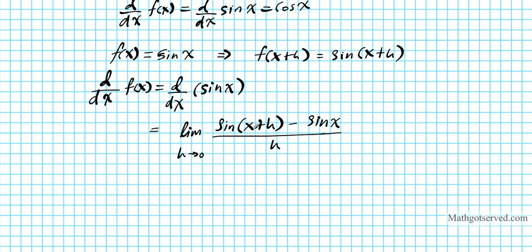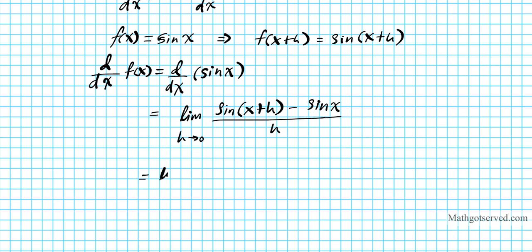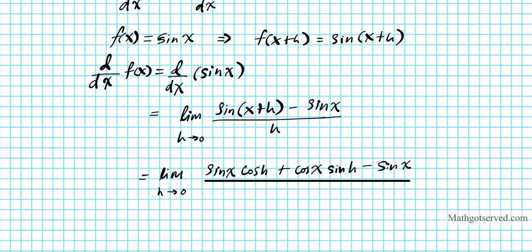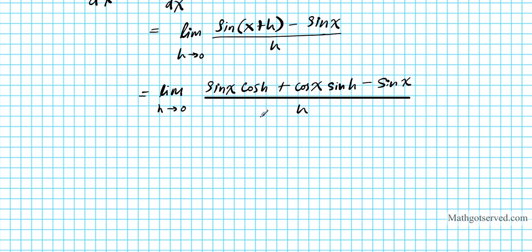Now I'm going to break down sine(x+h) using formula number four, the sum identity for sine. So sine(x+h) expands to sine x cosine h plus cosine x sine h. The expression becomes the limit as h approaches zero of (sine x cosine h plus cosine x sine h minus sine x), all divided by h.